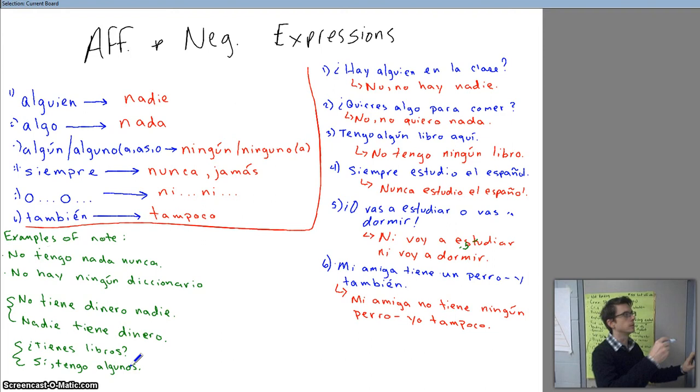You've got alguien and nadie. You've got algo and nada. Algun, alguno. Ningun, ninguno. And you notice that some of those have a few plural and feminine endings as well.